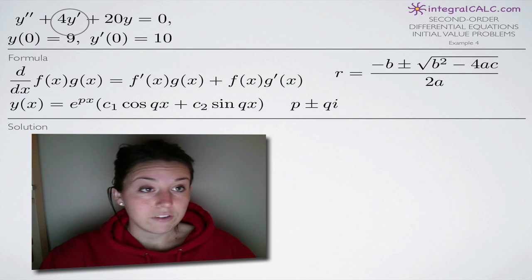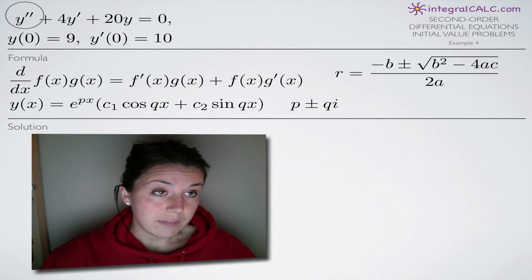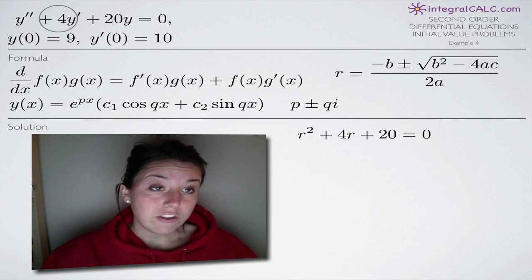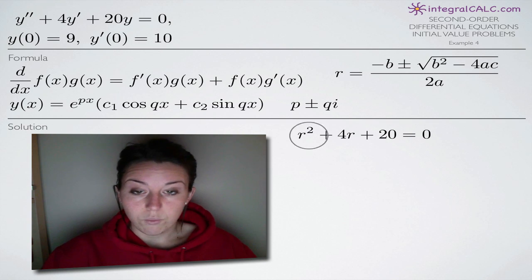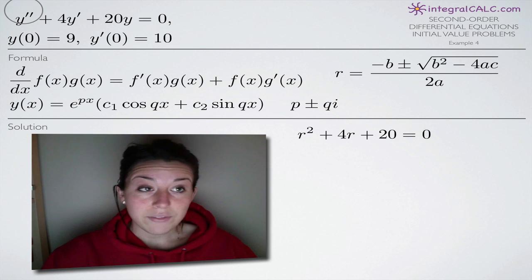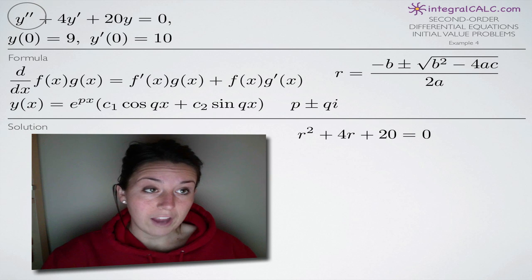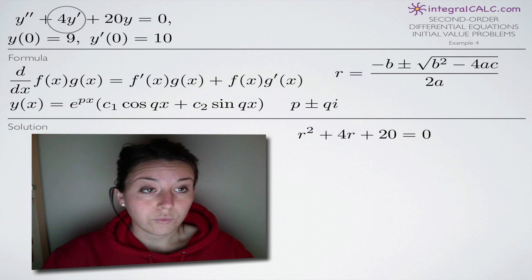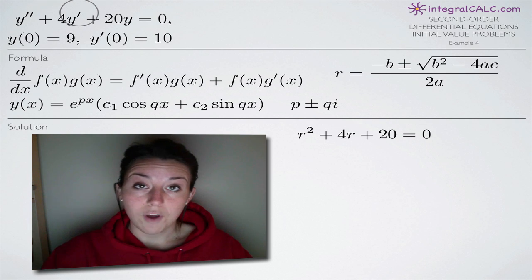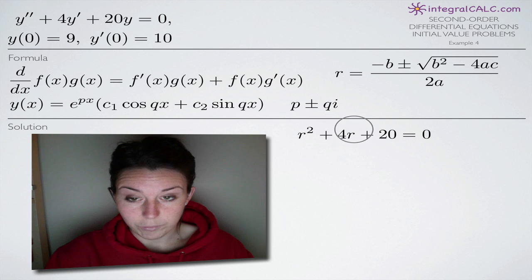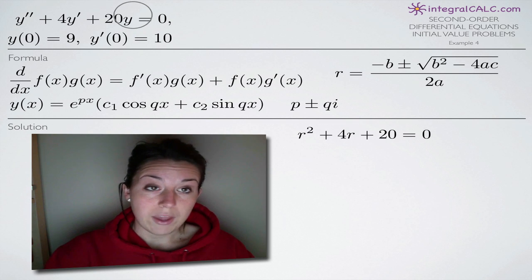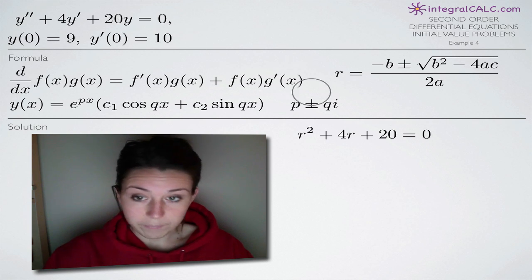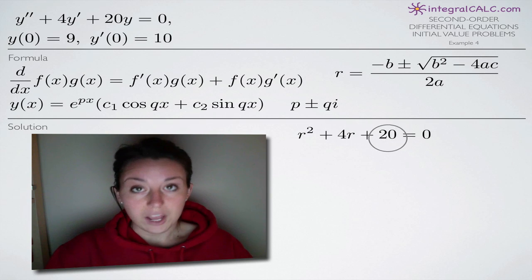A quick little trick I use: I count the hash marks on each y variable. So we have y with two hash marks, which means we're going to have r squared — you can see we replaced that with r squared here. Here we have y with one hash mark, so we replace that with r to the one, or just r. Here for y with zero hash marks, we replace that with r to the zero, but r to the zero is just one, so we multiply 20 times one and just get 20 — that kind of drops away.